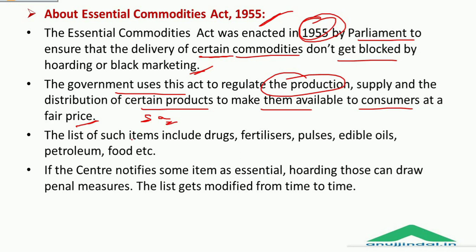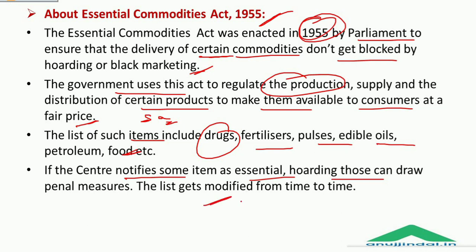The list of items covered under the Essential Commodities Act includes drugs, fertilizers, pulses, edible oils, petroleum, food, etc. If the centre notifies some items as essential, holding those can draw penal measures, and the list gets modified from time to time.